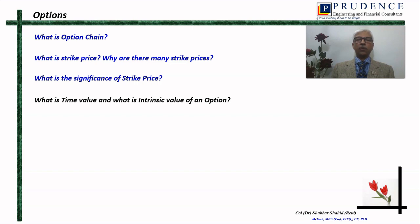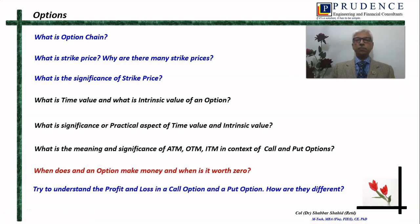Thereafter, you should try and understand what is an option chain. When you look at the screen of your monitor or when you are trading on your platform, try to find out the meaning of the option chain — what it is, what its relevance is. Then, what is the strike price? Why are there many strike prices? When you want to purchase an option on one particular stock, you will find there are tens of options available to you. Why are there so many options?